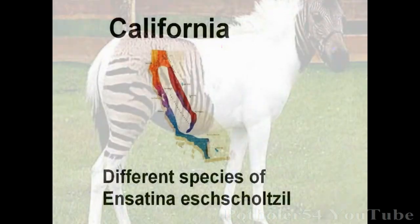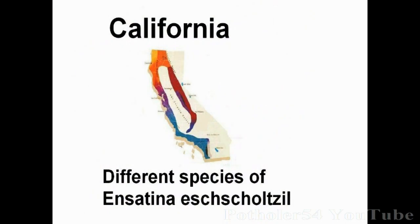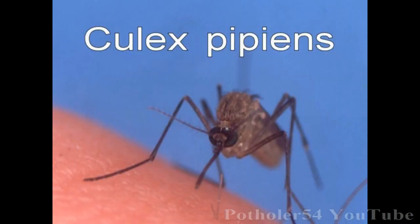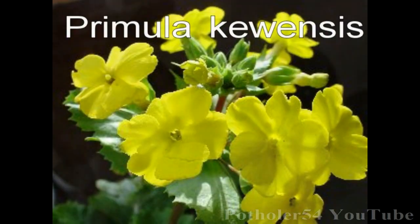An even better example is found around mountains, where a species evolves as it spreads geographically. Each species can interbreed with the one next to it, but the species at each end of the line can't interbreed with each other. Among organisms with very fast reproduction rates, such as bacteria and flies, separation into new species has indeed been seen.